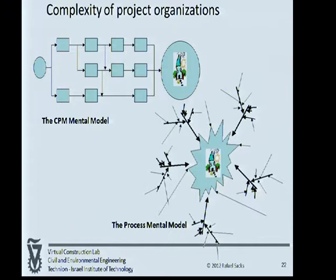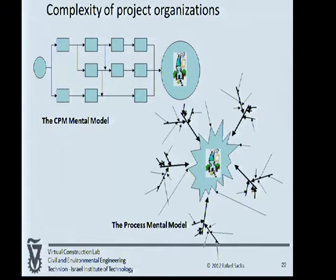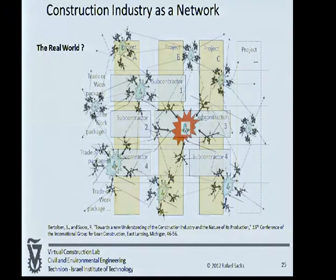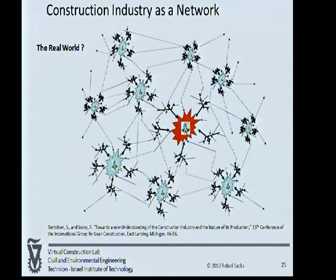The real world looks more like this: there are all these supply chains feeding into the project, most happening off site — preparing, designing, fabricating, doing various analyses — and eventually all applying their labor to the project where it's actually being built. But each of those subcontractors is probably working on more than one project at a time, juggling their labor between all those projects. So the real world actually has all these different projects competing for the same resources. They're sharing resources, but sometimes that sharing is not so friendly, and so we end up with subcontractor behavior that begins to help us understand why projects have become so much longer in time.